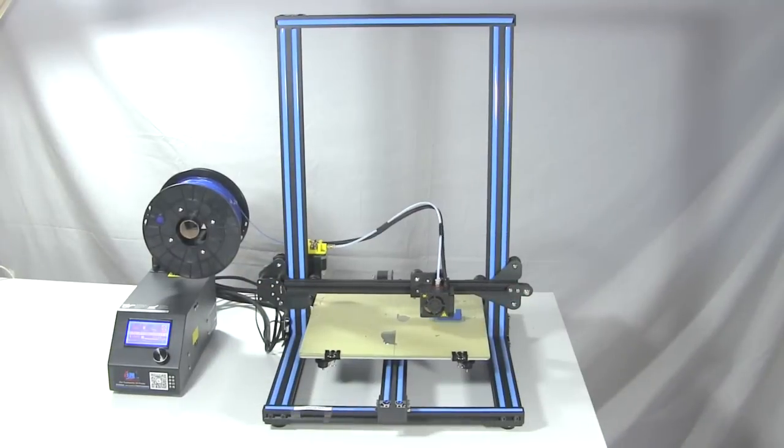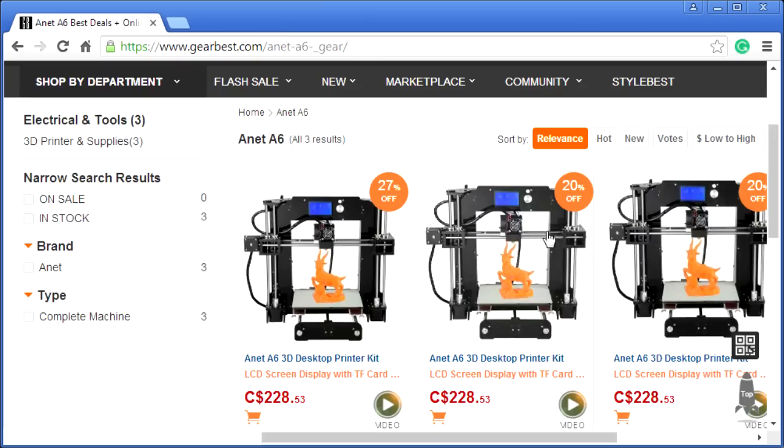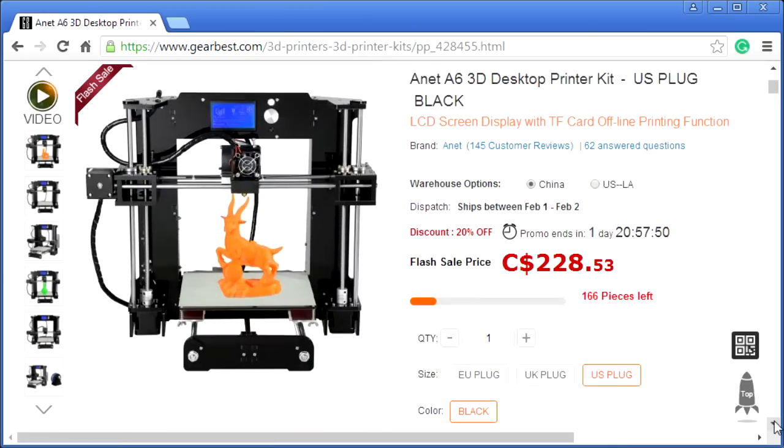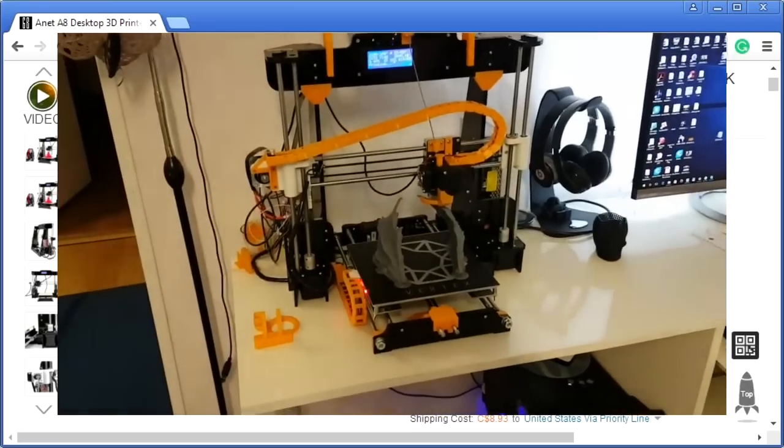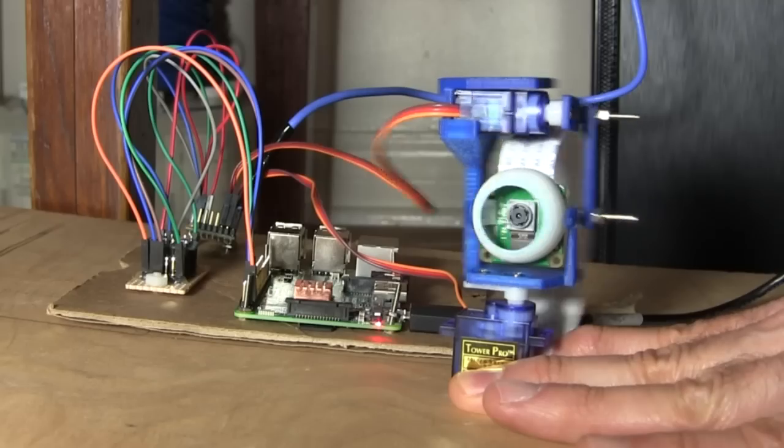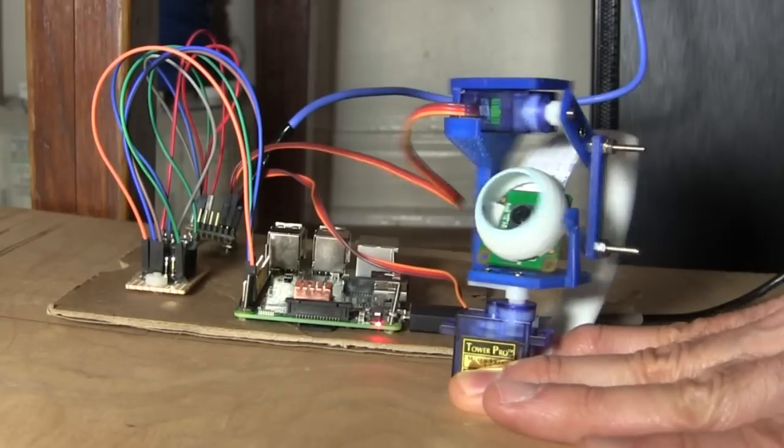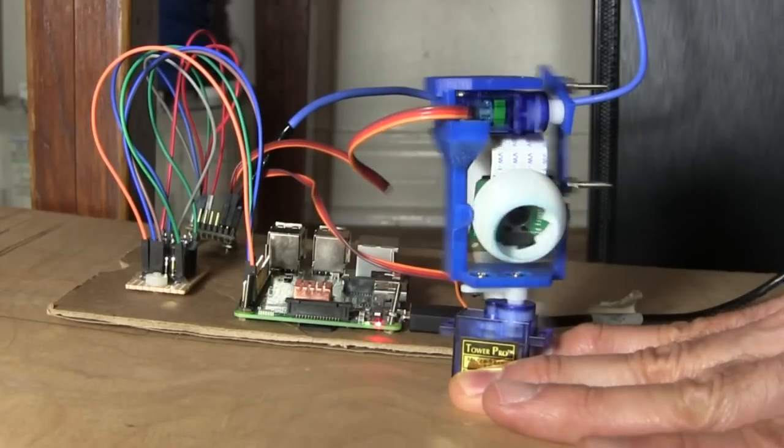I picked the CR10 because it's a good quality printer at a low price. I considered other inexpensive printers like the Anet A6 and Anet A8, but those require modifications to get better quality, which a lot of people enjoy doing. But I wanted to focus on what I needed it for, so I figured I'd skip all those modifications.